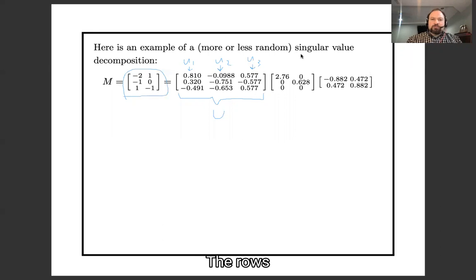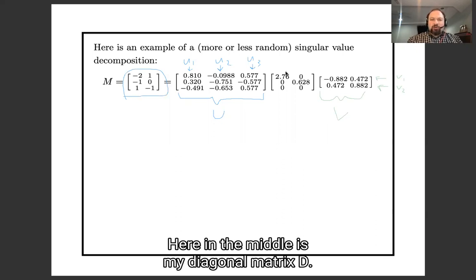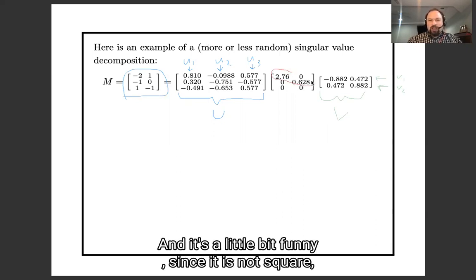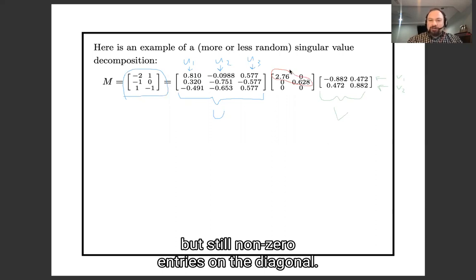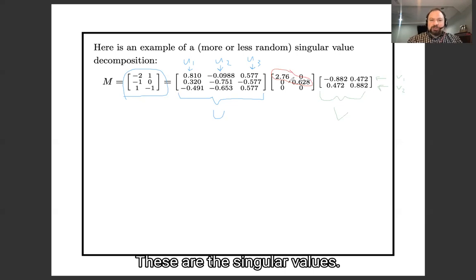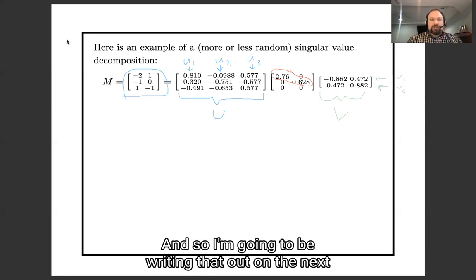The rows of V are v1, v2. This is an orthonormal basis of R^2. Here in the middle is my diagonal matrix D and it's a little bit funny since it's not square but still all the non-zero entries on the diagonal. These are the singular values and we have that when we multiply M times these vectors v1, v2, we get these vectors u1, u2, u3 times these scalars.